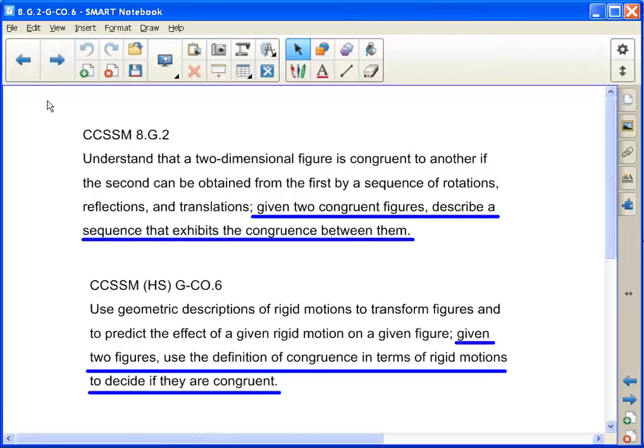In the Common Core State Standards for Mathematics, students are to think about congruence using rigid motions. In eighth grade and in high school geometry, there's a similar expectation.